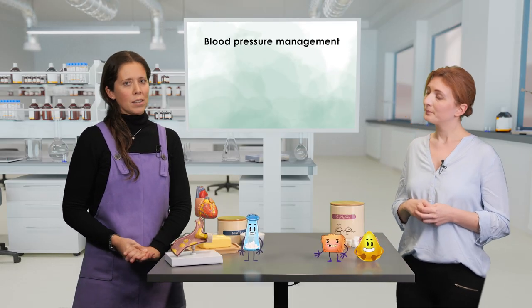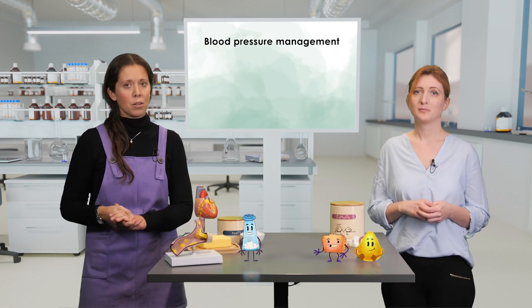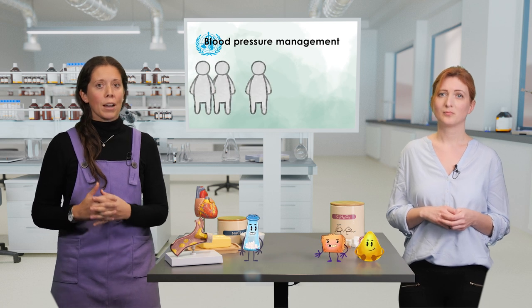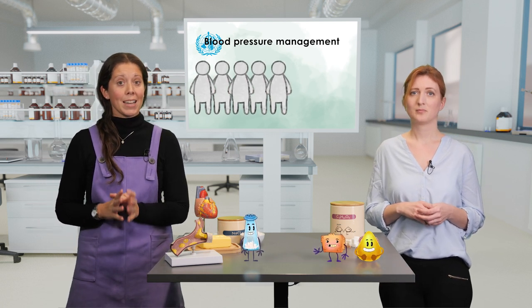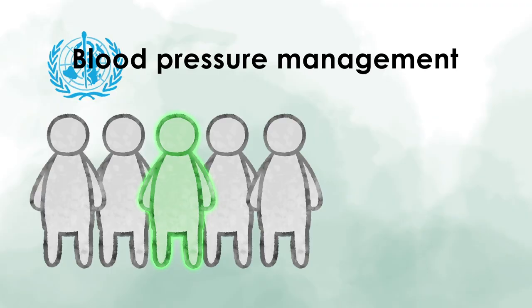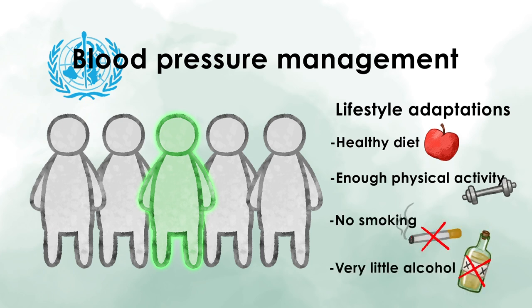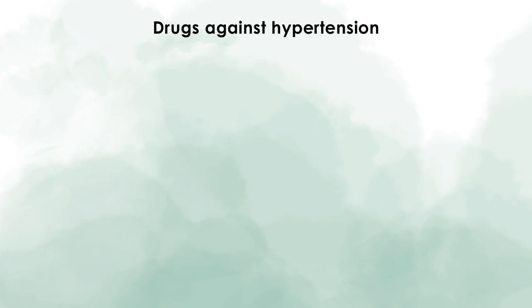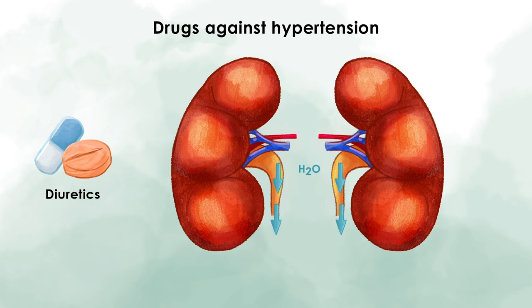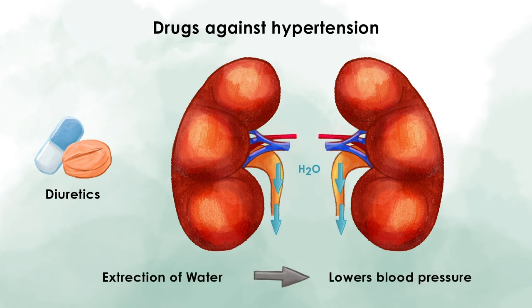According to the World Health Organization, only one out of five people suffering from hypertension has it under control. Interventions often start with lifestyle adaptations such as a healthy diet, enough physical activity, non-smoking, and very little alcohol consumption. However, patients with hypertension often need medication to get their values under control. One class of these medications are known as diuretics, which help excrete more water through the kidneys, thereby reducing blood volume, which lowers the pressure on the blood vessels and the strain on the heart.